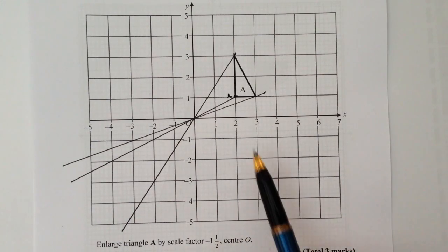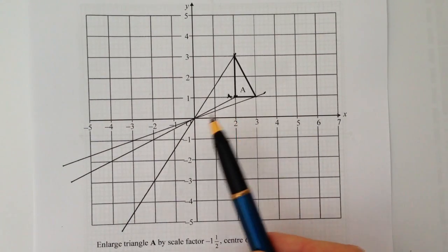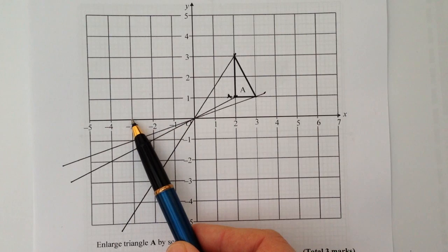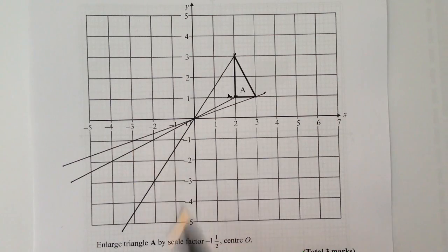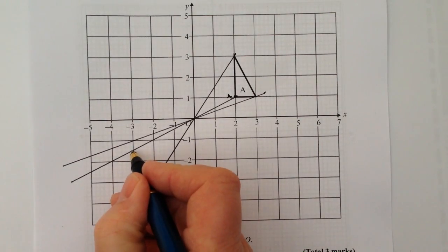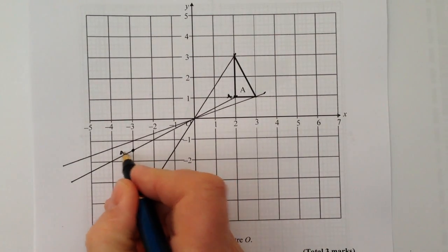So I've gone along two and up one. So in order to enlarge by one and a half I'm going to multiply two by one and a half so I'm going along three. And rather than going up one, because I'm multiplying by one and a half I'm going to go down one and a half. So this now becomes A prime.